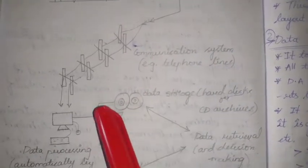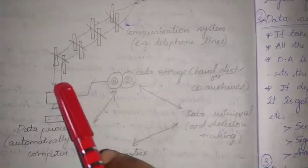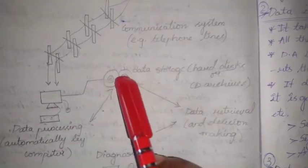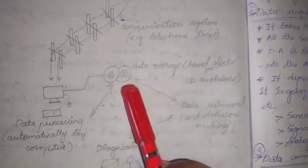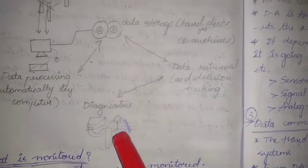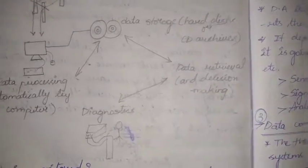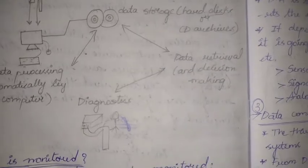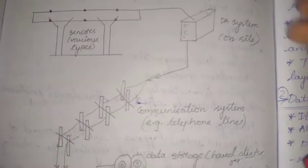Next we have the data processing system — the data that is collected will be processed. After processing, whatever data remains will be stored in the data storage or repository systems, which involves hard disks, CDs, and archives. Then we have data diagnostics and data retrieval — we read out the collected data and make decisions, assessing how the structure is going to behave in its upcoming life. This is the diagrammatic representation showing the acquisition system, storage system, retrieval system, and all these components of SHM.